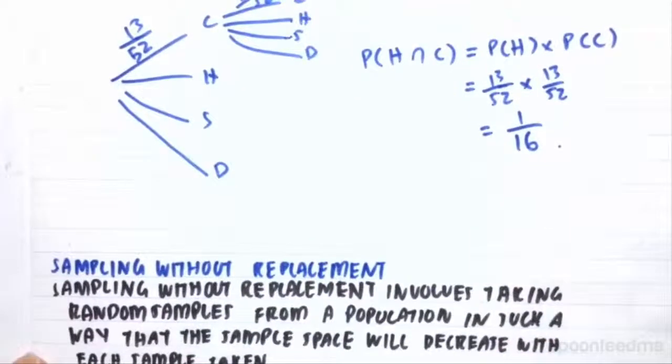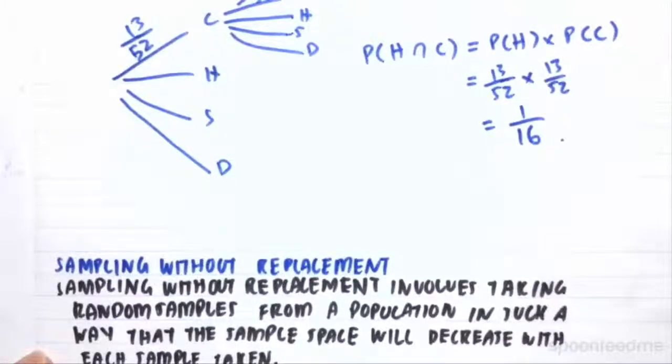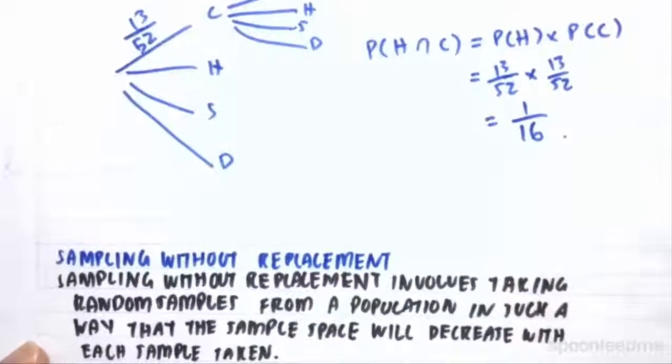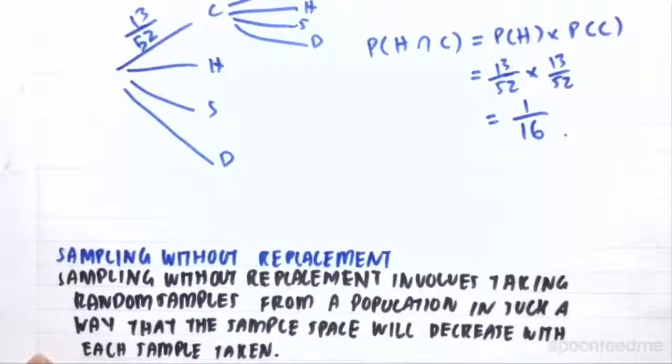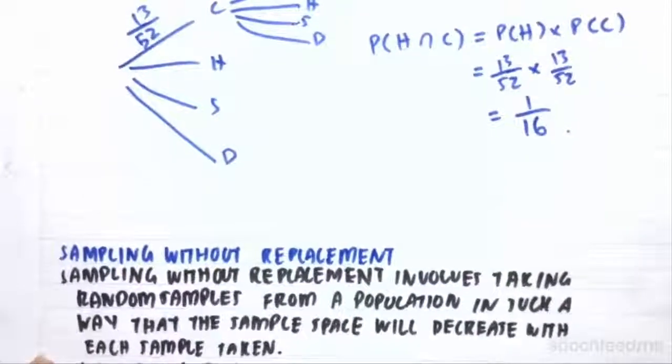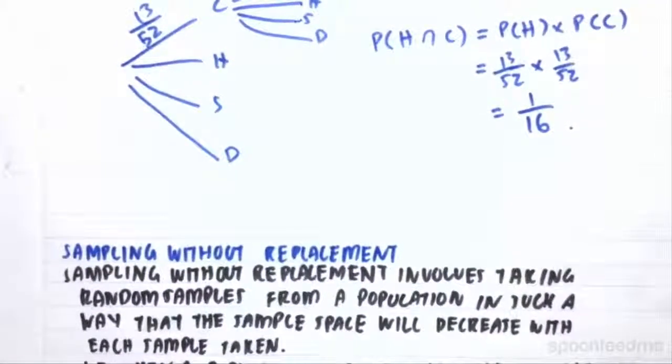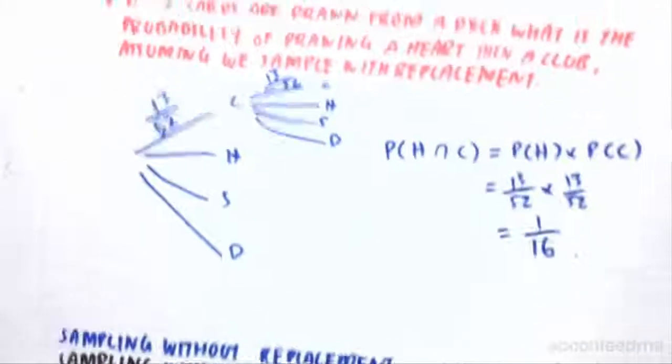So sampling without replacement, this involves taking a random sample from a population in such a way that the sample space would decrease with each sample taken. For example, in simpler terms, when a population element can only be selected once, for example, that 2 of hearts that you drew, because after it is selected, you don't replace it and you keep it forever. Now that deck is missing a 2 of hearts, and you only have 12 hearts left and 51 cards left to pick from.